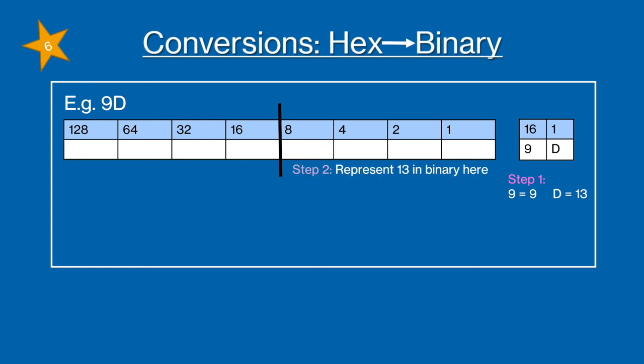For step two you're going to represent the right hand column of your hexadecimal table on the right hand bit of your binary table. So you're basically taking your 13 and representing it in the 8, 4, 2, 1 area. So that's going to be 1 1 0 1.